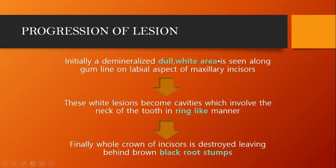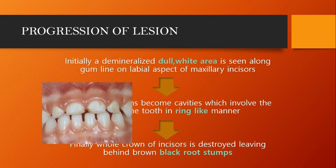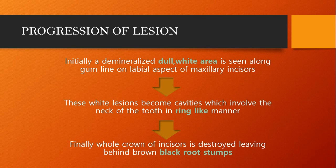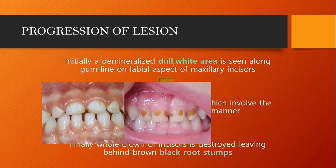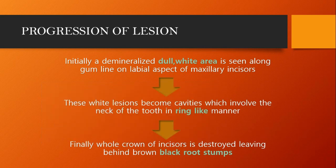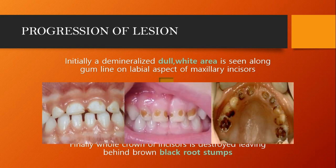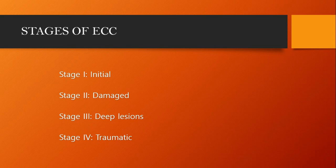Regarding progression of the lesion: initially a demineralized dull white area is seen along the gum line and labial aspect of maxillary incisors. These white lesions become cavities which involve the neck of the tooth in a ring-like manner. Finally, the whole crown of the incisors is destroyed, leaving behind brown-black root stumps. Our main aim is to diagnose as early as possible and provide prompt treatment.